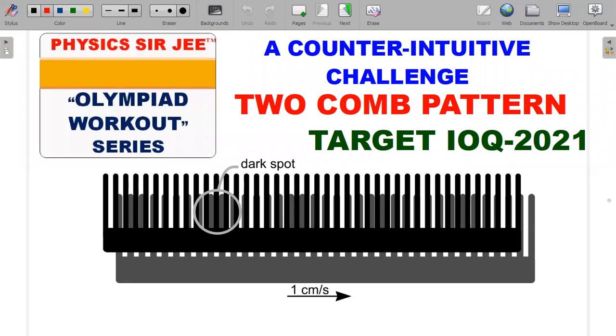Hey, welcome back to the channel Physics Sir JEE. We are in the Olympiad Workout Series targeting IOQ 2021. This is a counter-intuitive challenge involving two combs dragged against each other. It's a question from the 2014 Estonian-Finnish Olympiad. I like this question because it's a problem that can be solved using an approach from a topic that doesn't immediately appear obvious from looking at it.